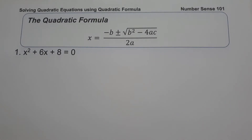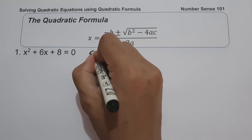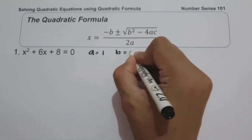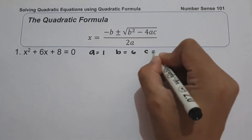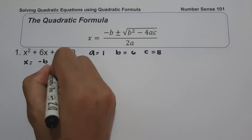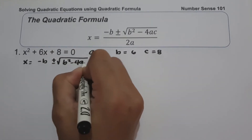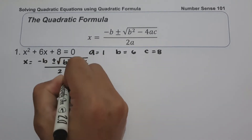Let's start with the first example. On number one, we have x squared plus 6x plus 8 equals zero. Since the given equation is already written in standard form, we can easily identify the values of a, b, and c. So the value of a is 1, b is 6, and c is 8. We have the quadratic formula: negative b plus or minus square root of b squared minus 4ac, all over 2a.